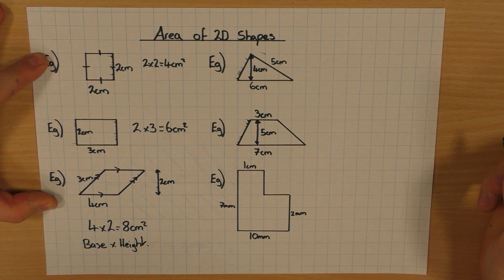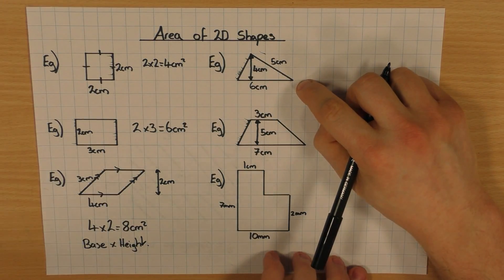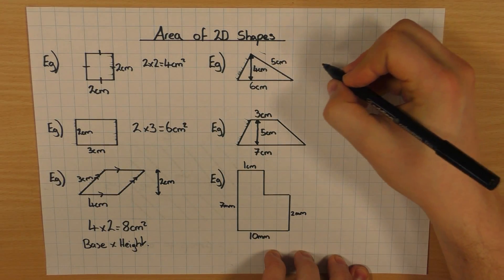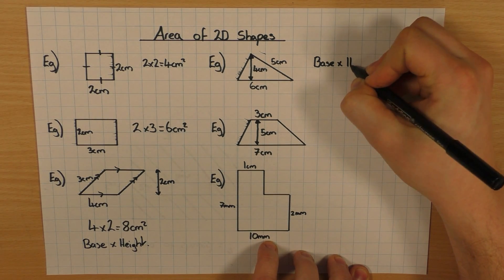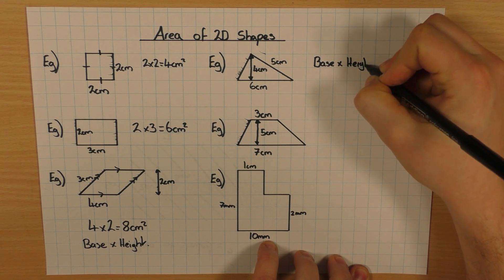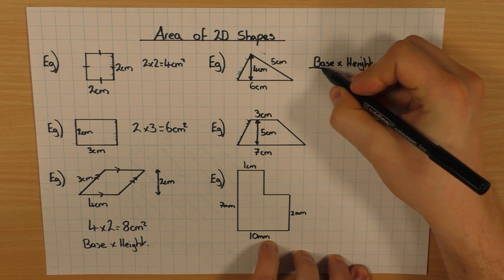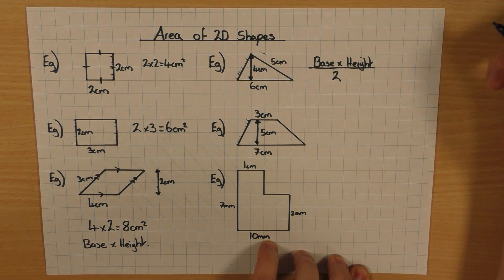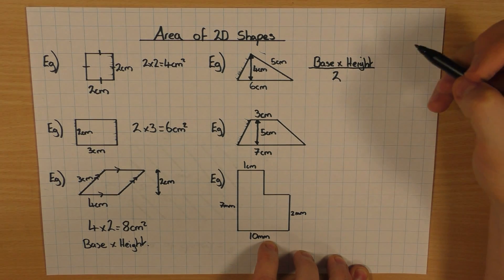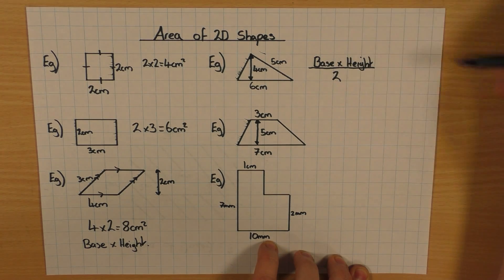Triangle, slightly different. This one here, it's base times by the height. And then we half it, because it's half the area of a rectangle. So, base times height and half. If you use length times width, it just means the same thing. I'm using base times height.